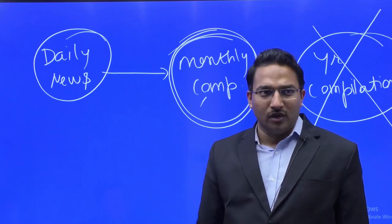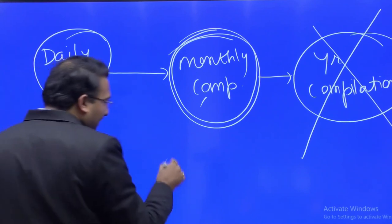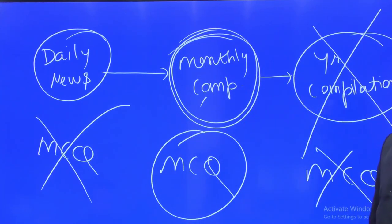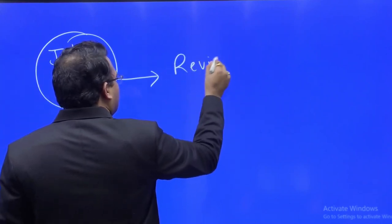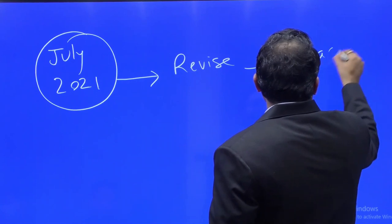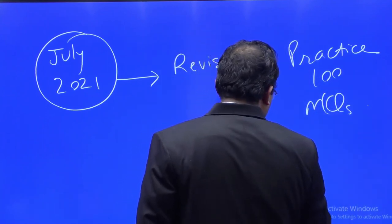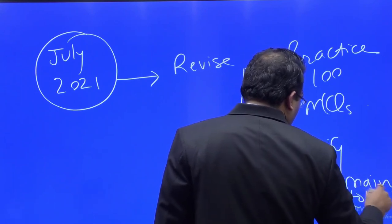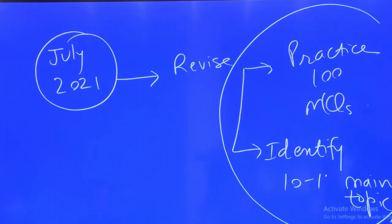You got the answer: daily newspaper, monthly compilation, yearly compilation. About MCQs: daily and monthly MCQs — not required in isolation. The ideal approach is: pick up one monthly magazine, say July 2021, revise it, then practice 100 MCQs based upon it, and identify 10 to 15 main topics which you need to prepare based upon that monthly magazine. This is the ultimate objective — we need to clear prelims and mains.